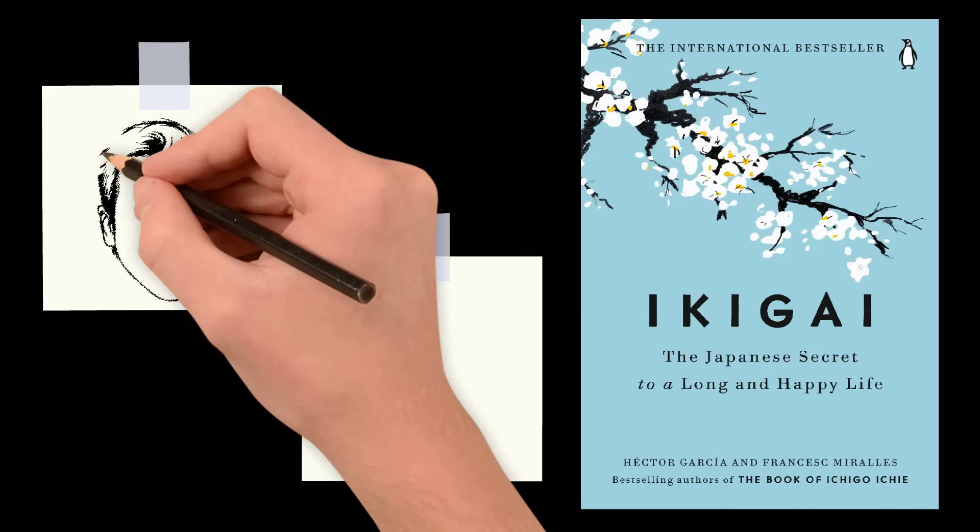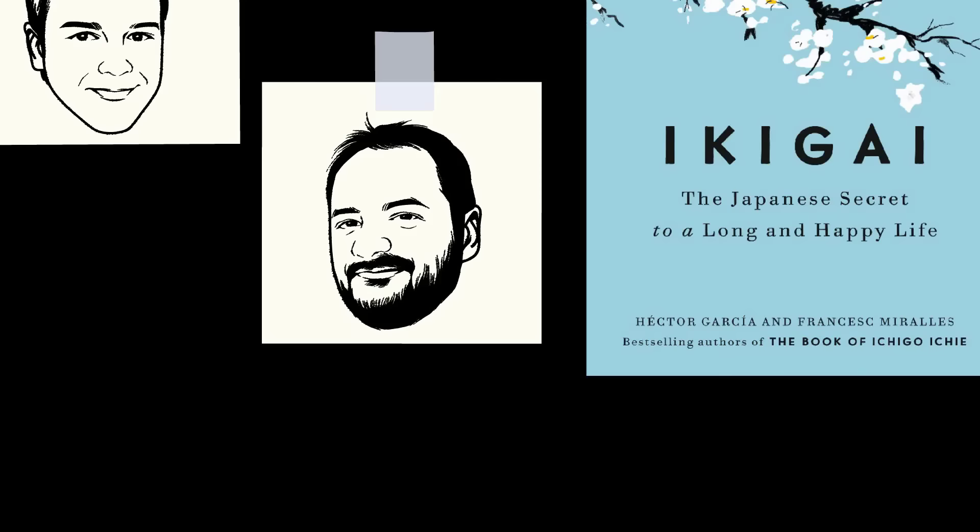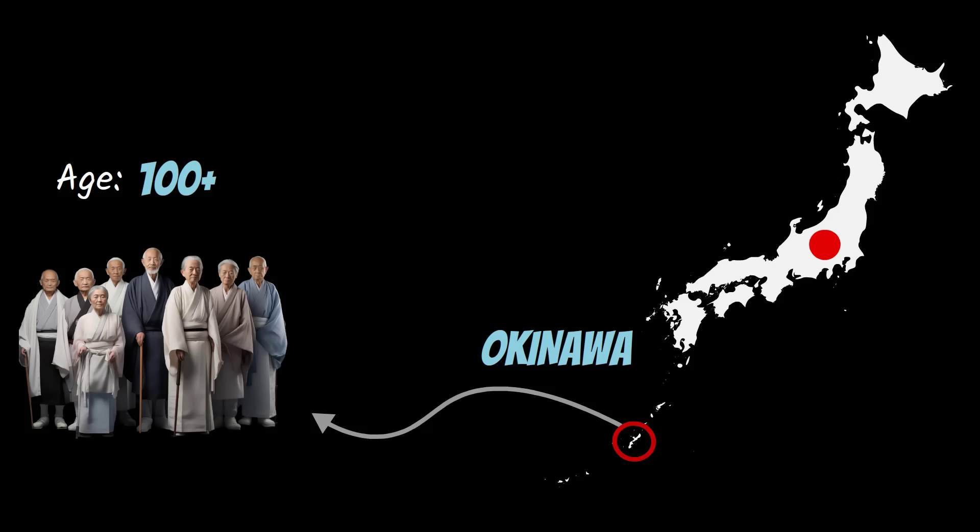I recently read Ikigai, The Japanese Secret to a Long and Happy Life by Hector Garcia and Francis Mirias. In the small Japanese island region of Okinawa, people lived past 100 at a rate higher than anywhere else in the world. Garcia and Mirias moved to Okinawa to discover why.